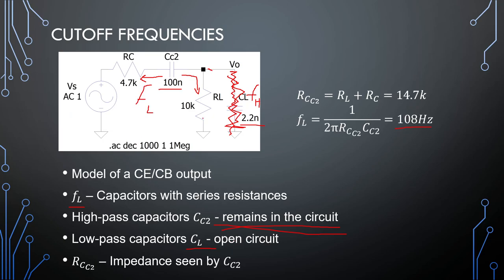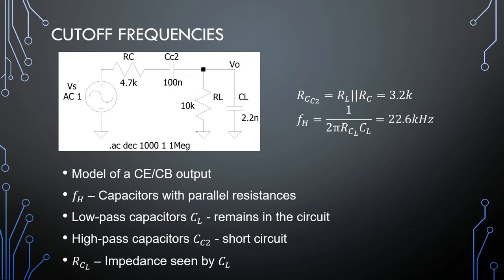For the high frequency, we look for capacitors in parallel. Low-pass capacitors remain in the circuit, and any high-pass capacitors become short circuits. Making the high-pass capacitor a short and removing the AC source, this low-pass capacitor sees RC in parallel with the load, giving us 3.2 kΩ. Plugging that into the equation gives us 22.6 kHz.